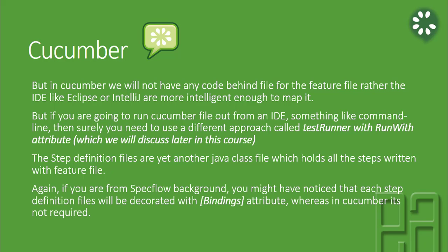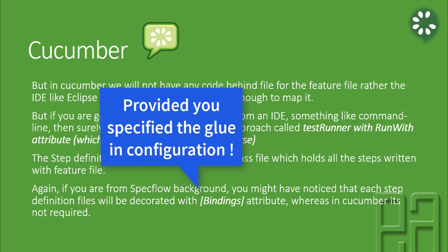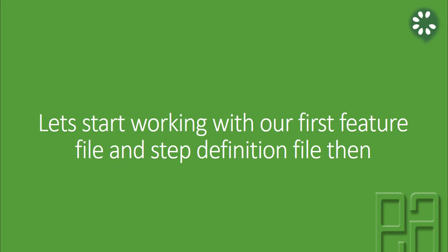If you are from a SpecFlow background, you might have noticed that each step definition file is decorated with a bindings attribute in C#, whereas in Cucumber that's not required. The mapping between a feature file's step and the step definition file's step is automatically happening in Cucumber, but in SpecFlow that's not the case. So let's start working with our first feature file, which we created in our previous video, and we will create a step definition file and understand how things work. For that, I'm going to flip to IntelliJ.